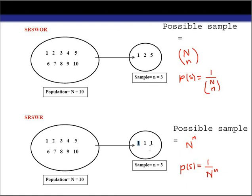In simple random sampling with replacement, there may be sample combinations where information is repeated from draw to draw. But in simple random sampling without replacement there is no chance of that, because from each draw we get new information. Whatever unit is selected at the first draw cannot appear again at the second or third draw, so information does not repeat.